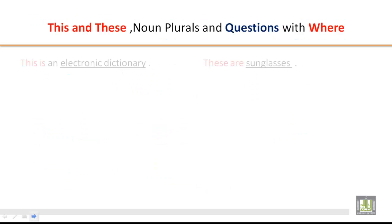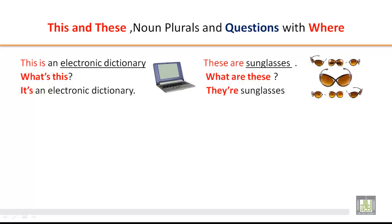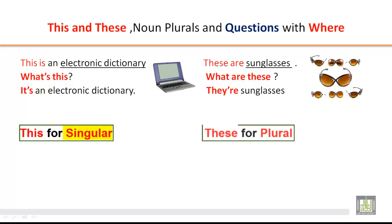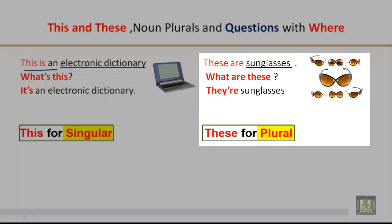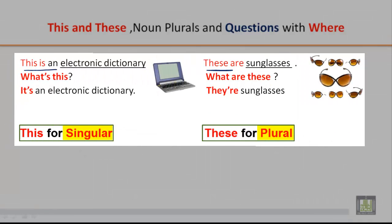Now let's practice about 'this' and 'these'. We use 'this' for singular and 'these' for plural. For example: This is an electronic dictionary. These are sunglasses, when there is more than one. For plural, we use 'these'. This is an electronic dictionary. These are sunglasses.